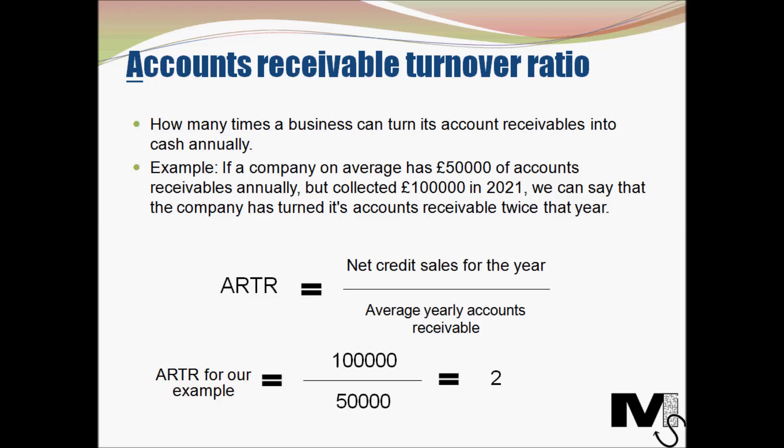Most businesses provide some form of credit to their customers, offering products or services on invoicing terms — sometimes payable on delivery, sometimes within 30 days of ordering. These payments haven't actually been made yet. So if a company on average has £50,000 of accounts receivables annually but has collected £100,000 in 2021, we can say the company has turned its accounts receivable twice that year.